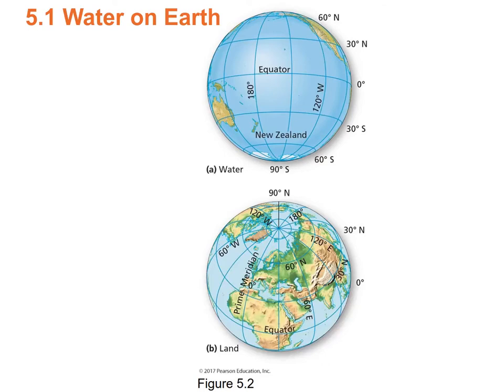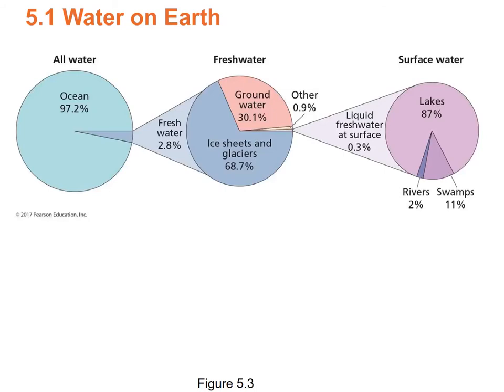If you were orbiting Earth over the Pacific Ocean, Earth looks like it's mainly water. But if you were looking at Earth from over Africa, you'd see Africa and Eurasia — most of the planet looks like it's covered by land.